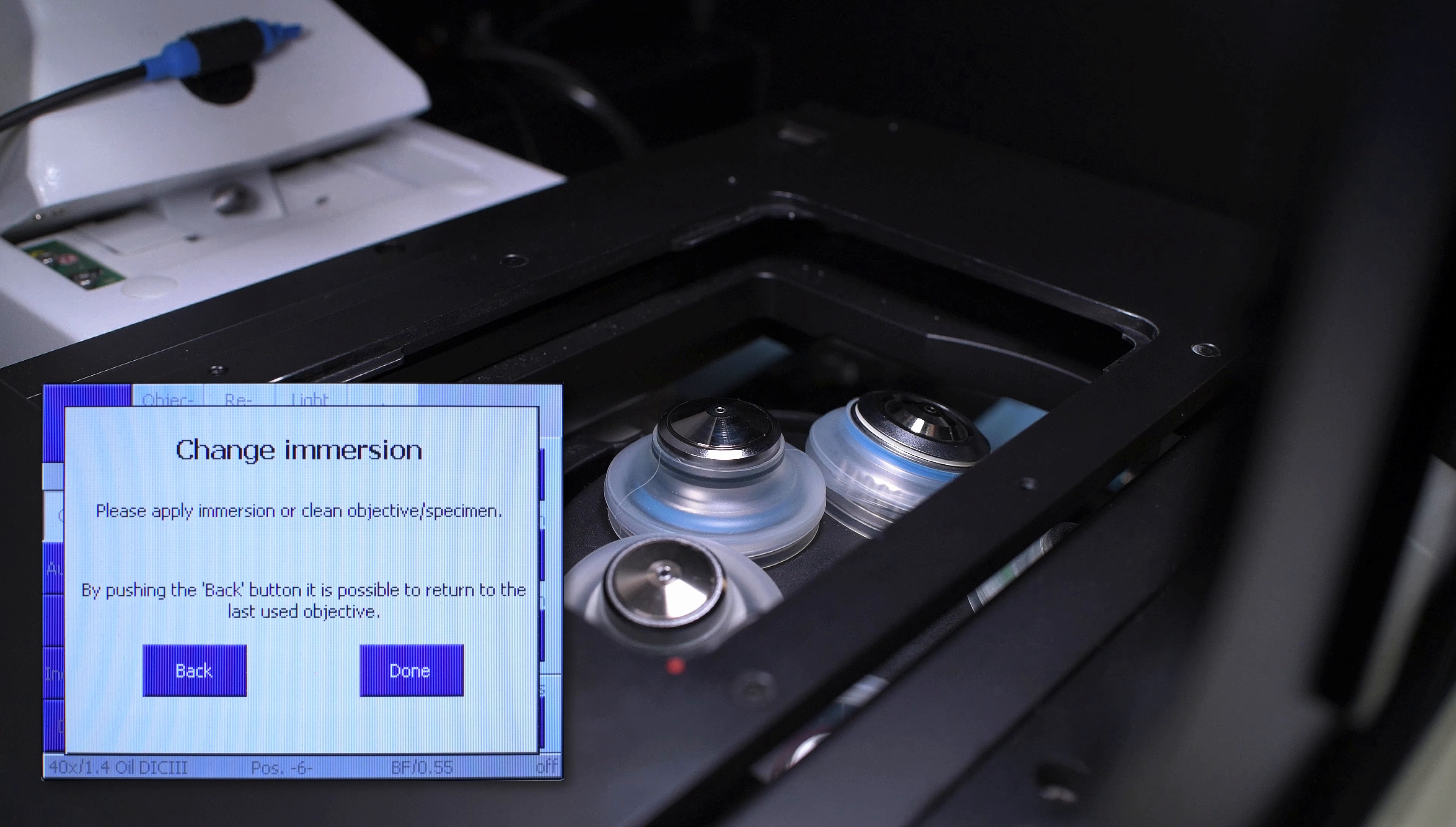If a dry objective was in place, the TFT will display a notification warning you that you are about to move from a dry lens to an immersion lens. This mechanism protects the objectives from coming into contact with immersion fluid if they are not designed for it. It is very important that you take great care to keep dry lenses dry.